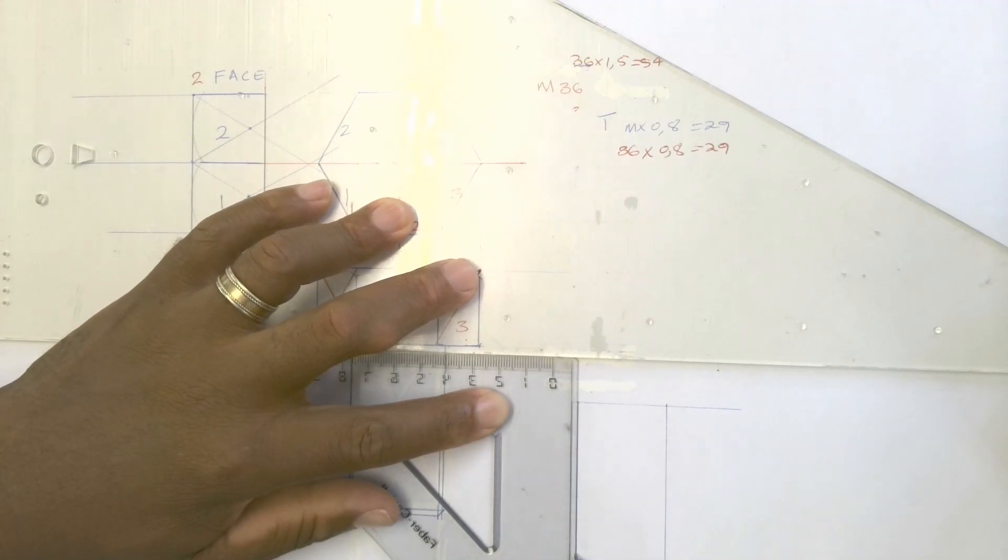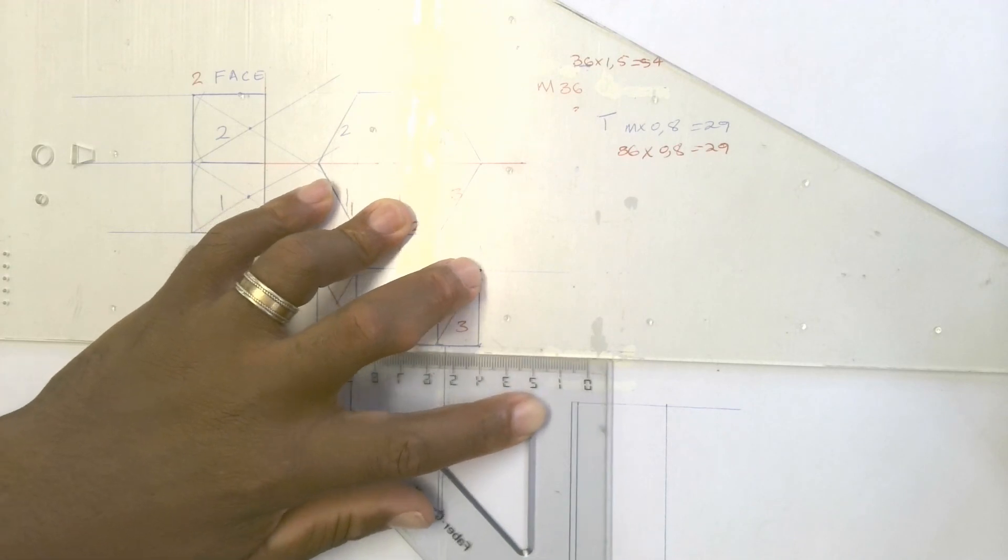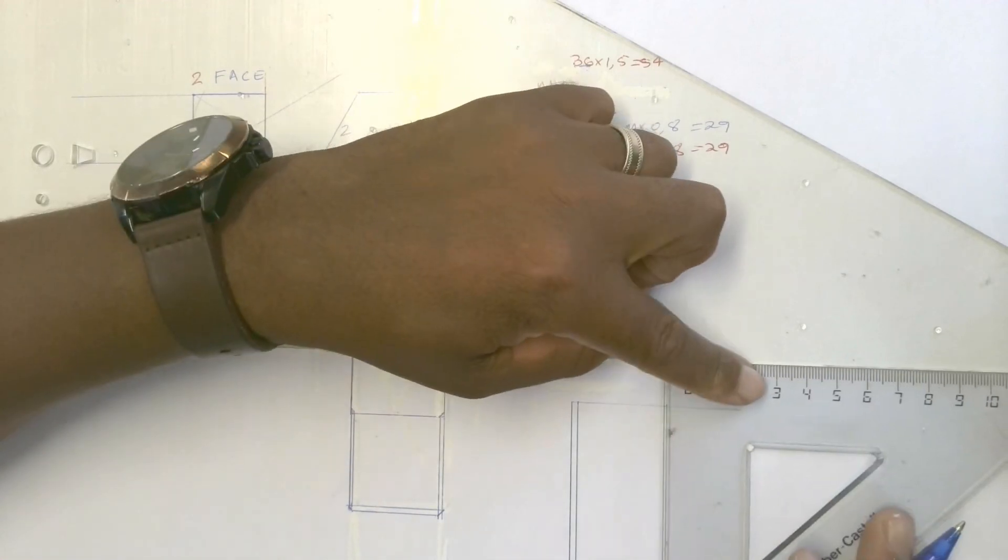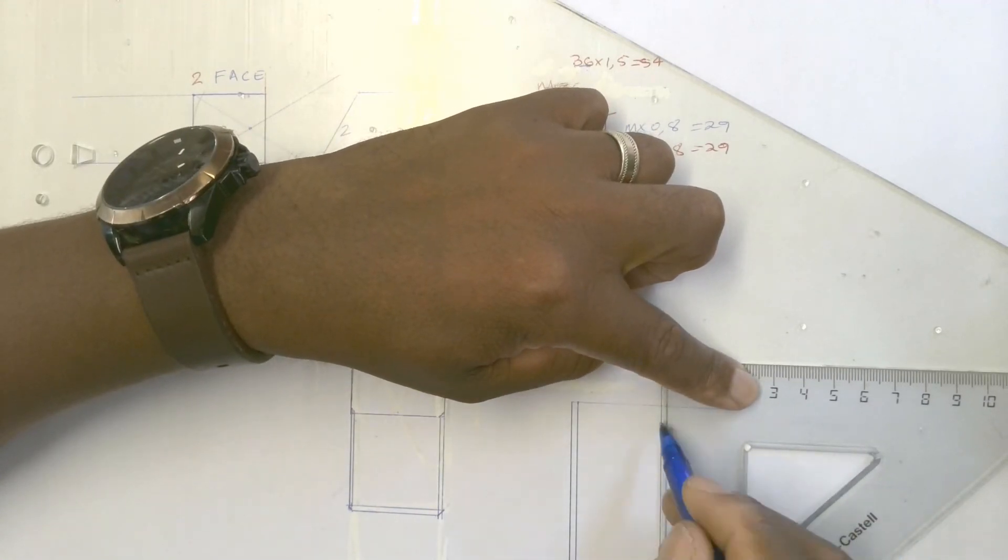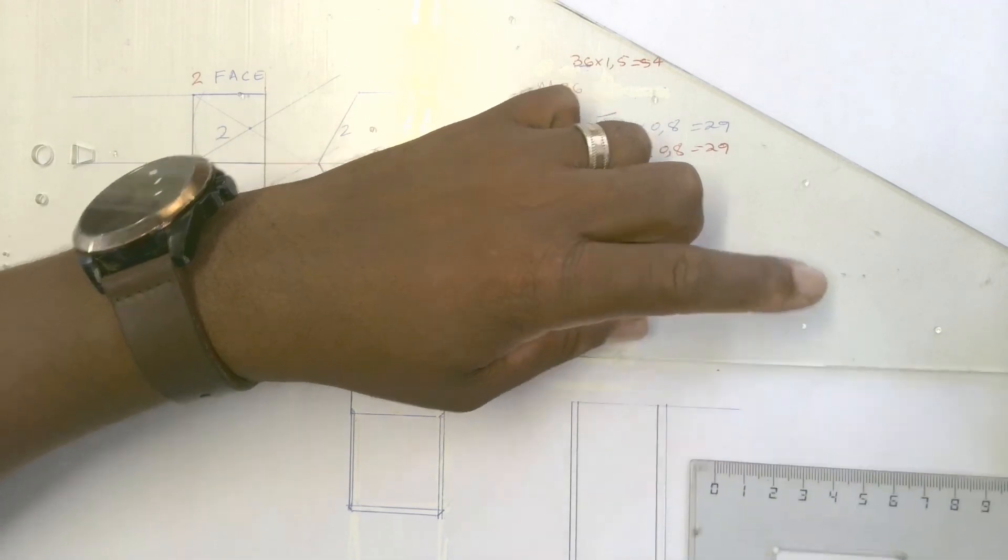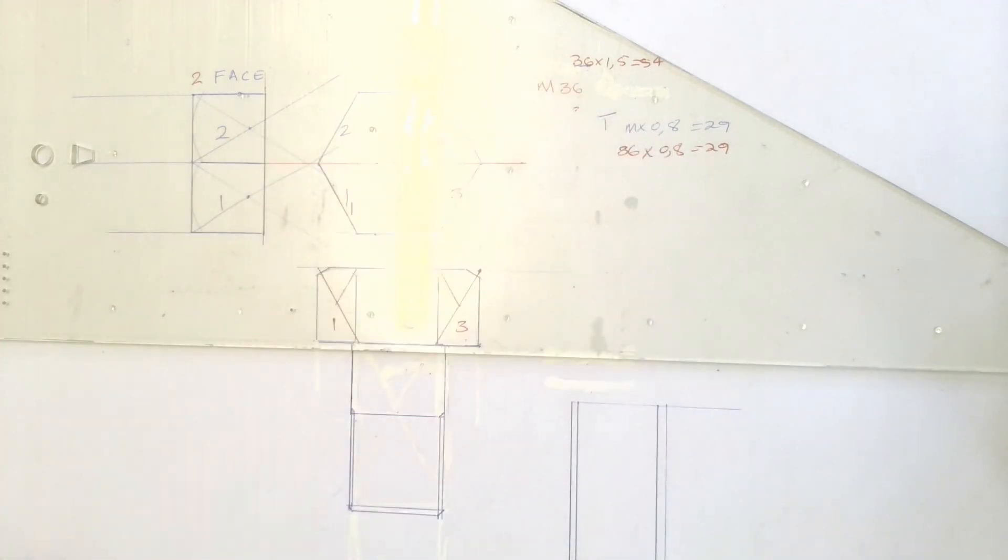This is the threads. Do it like this on the other side, and this is the thread. Now if you watch carefully, look at the distances. It is drawn in a much bigger scale.